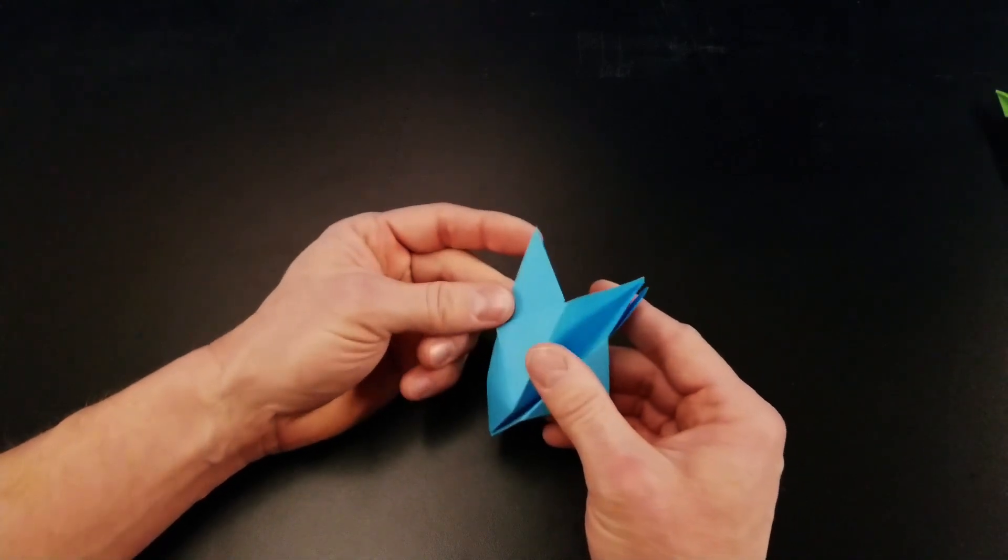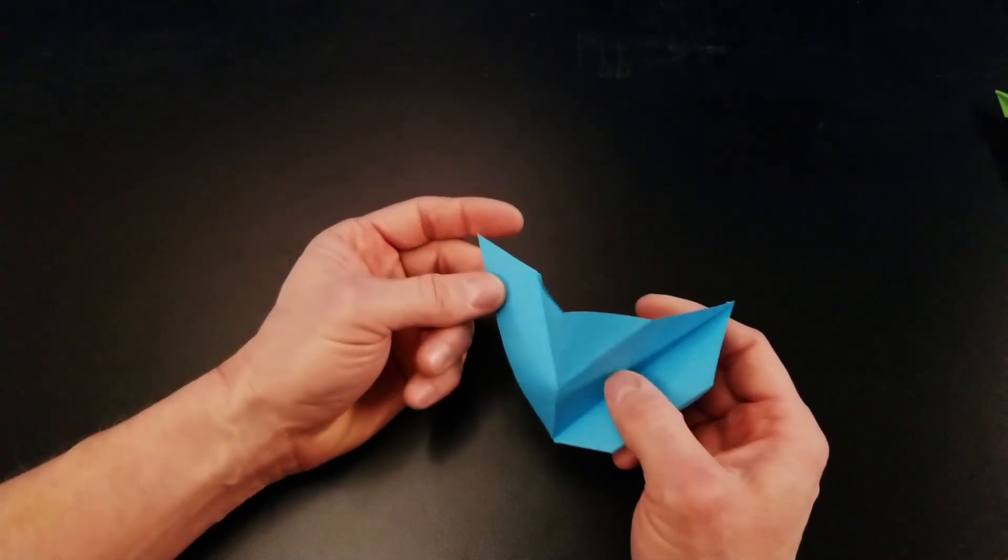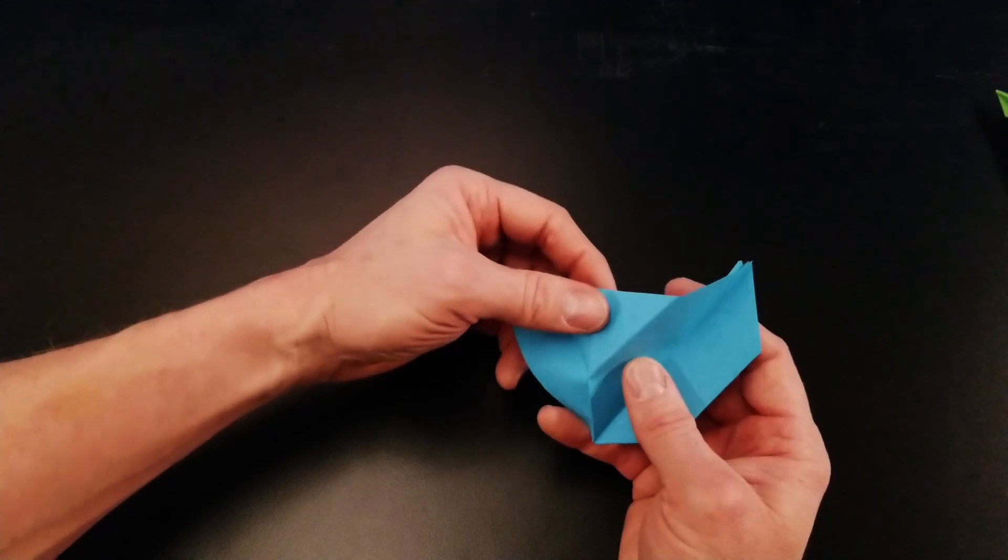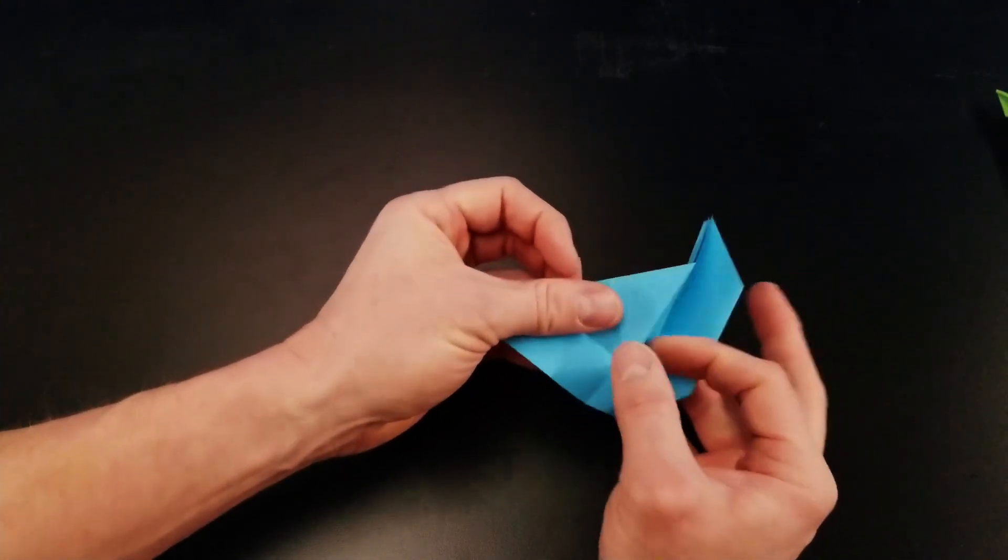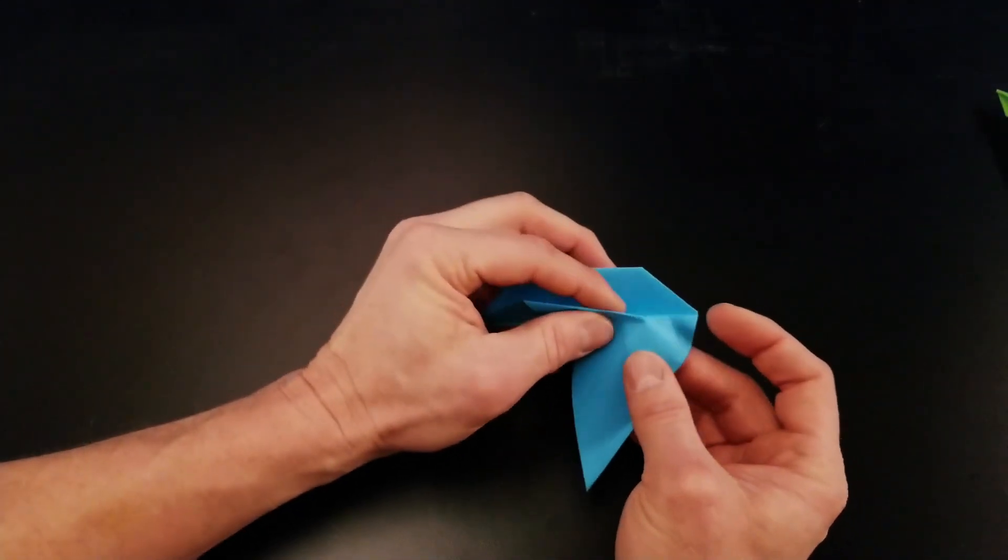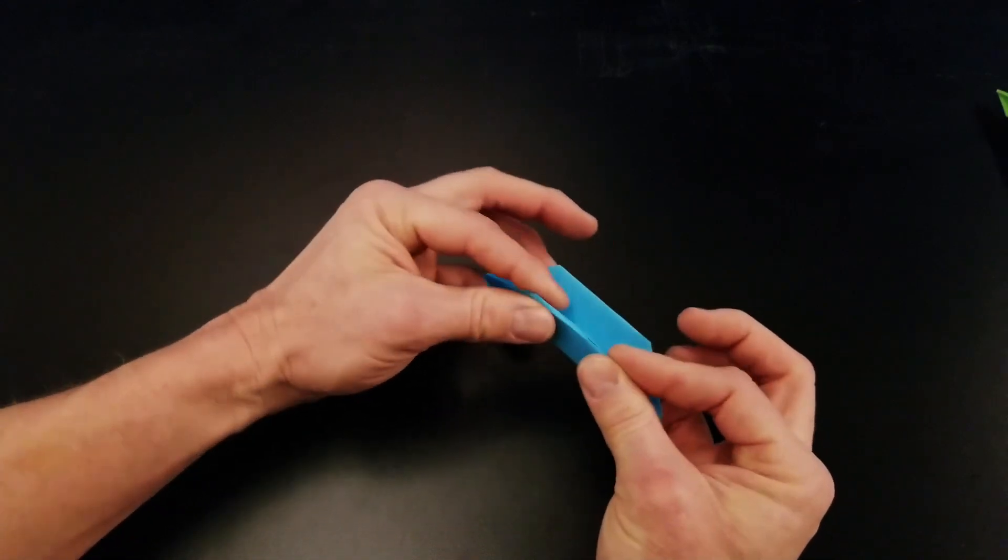I'm going to open the side of the paper here. We're going to do a reverse fold. So I'm going to push this down while bringing this one up and closing it.